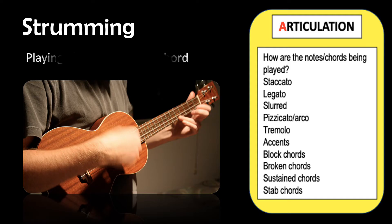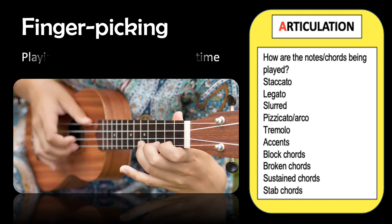Strumming is when you're on a guitar or a ukulele and you're playing all of the notes of the chord at the same time. Arpeggio is when you're playing the individual notes of the chord one at a time.